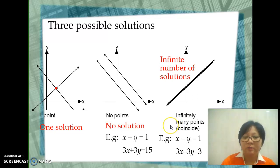There are three possible solutions. The first one is what we have just learned: one point of intersection. The graphs intersect at one point, which means one solution. But sometimes the graphs are parallel lines, so there will be no points of intersection, which means no solution.